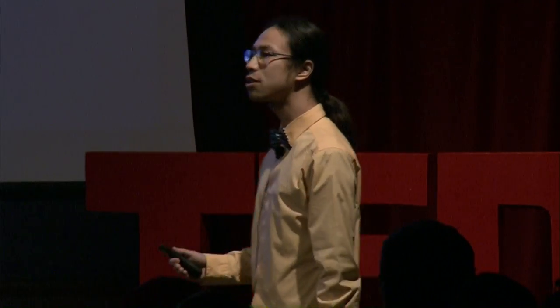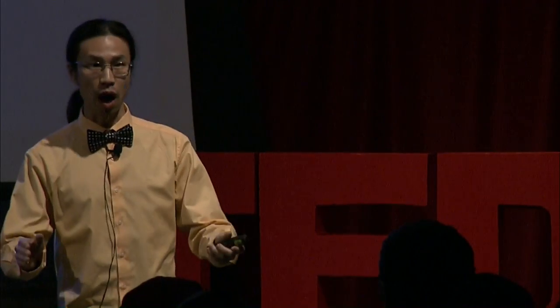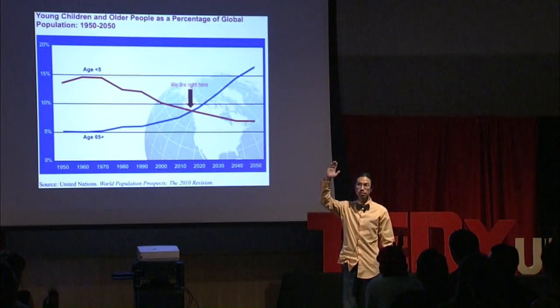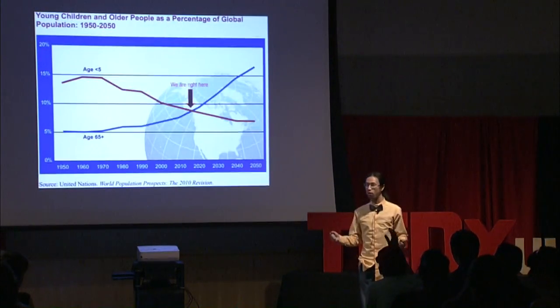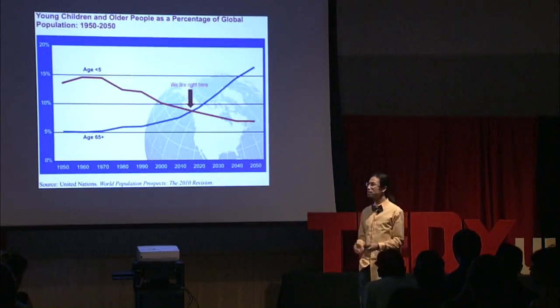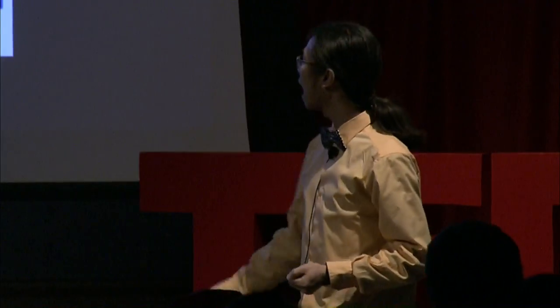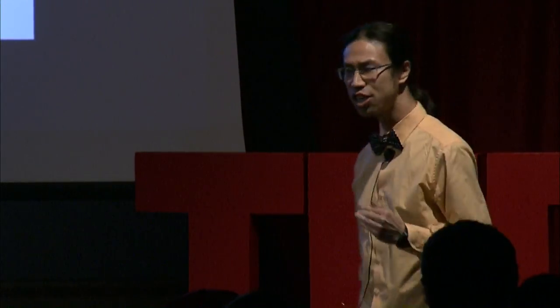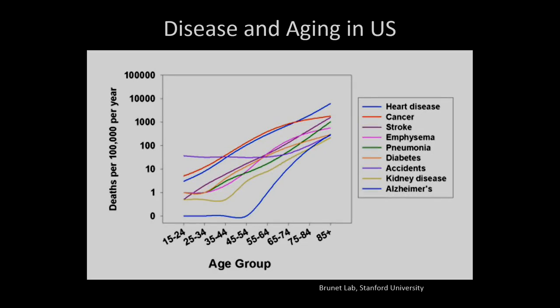Why is this important? I want to ask all of you: how many of you are around 20 years of age or younger? Good news — because your body, under ideal conditions, can fight off diseases. But as we age, our body becomes more susceptible to all forms of disease: heart attack, cancer, diabetes, Alzheimer's — you name it.